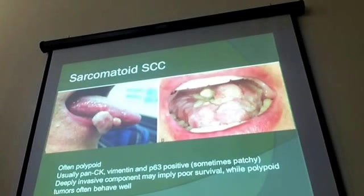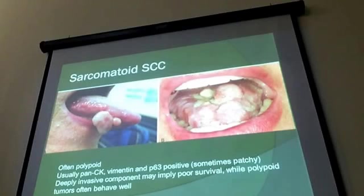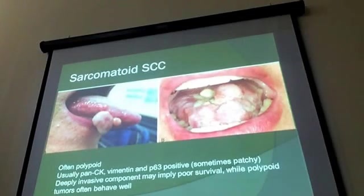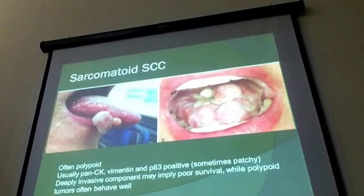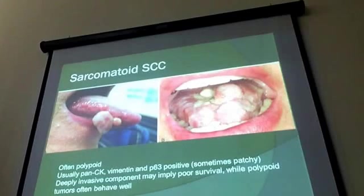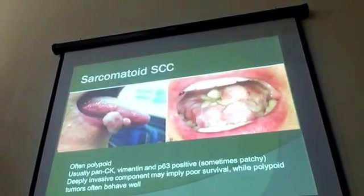I'll talk about some of the subtypes of squamous carcinomas. These do not particularly have prognostic value in and of themselves, but we see them differently. Sarcomatoid squamous carcinoma typically presents as a polypoid lesion, but may have a polypoid component and a deeply invasive component. These will usually have some expression of cytokeratins, P63, or other markers indicating origin in squamous mucosa, though this can sometimes be patchy. So if you have a biopsy that looks sarcomatoid, think first of sarcomatoid squamous carcinoma before considering rhabdomyosarcoma or something else.